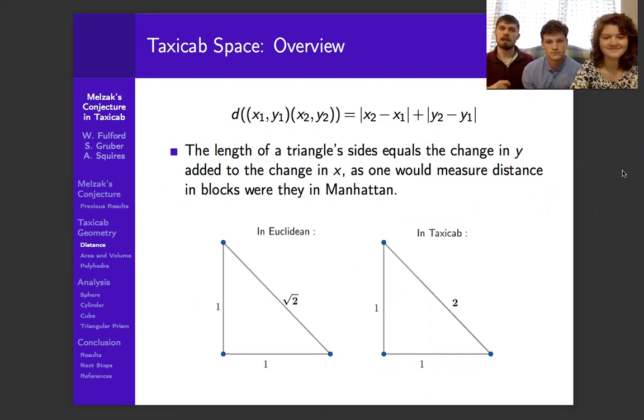Taxicab space says you're not allowed to go diagonally. So in this case, you have to go over and across. You can only go vertically and horizontally in taxicab space, which changes some of our distances.